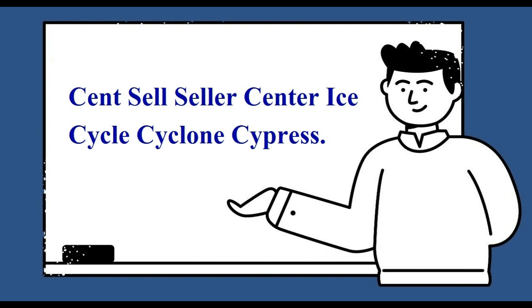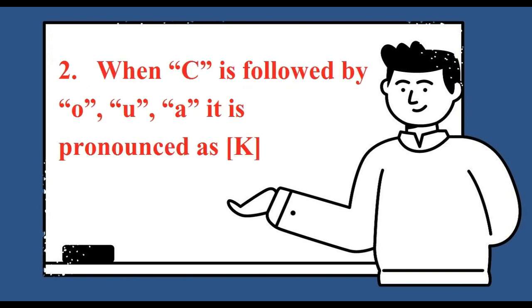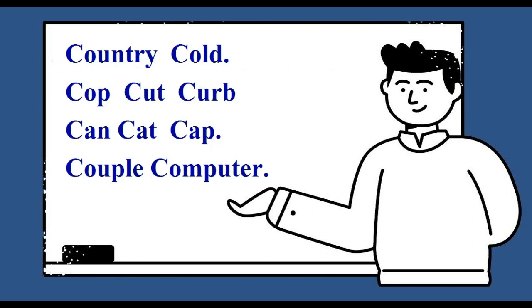When C is followed by O, U, or A, it is pronounced as K: country, cold, cop, cut, curb, can, cat, cap, couple, computer.